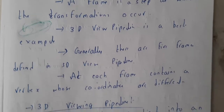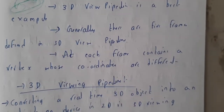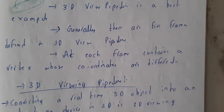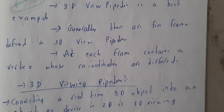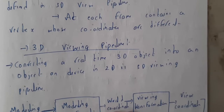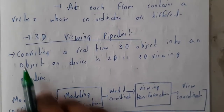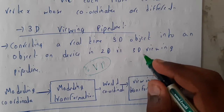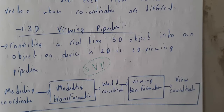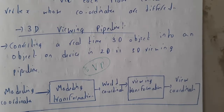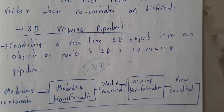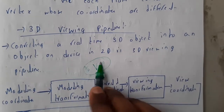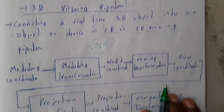Generally there are five frames in the 3D view pipeline. At each frame, there is a set of vertices completely different from the previous, because different transformations occur in between, giving us new coordinates. The main goal of the 3D view pipeline is that whatever images we draw or take on our phone, everything is 2D — 3D displays are really rare in graphical systems. So the 3D view pipeline converts a 3D image into a 2D image.